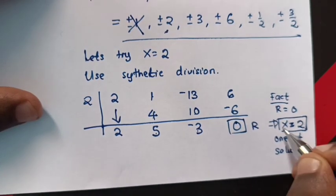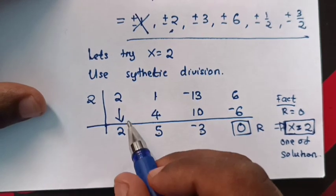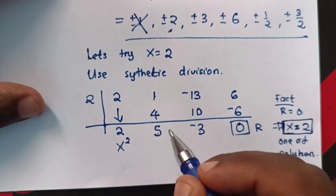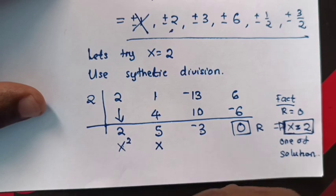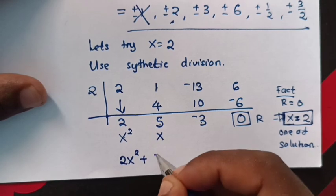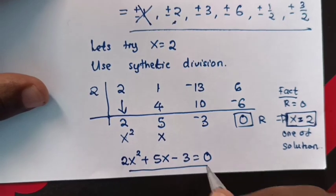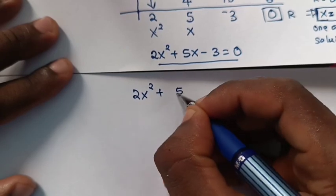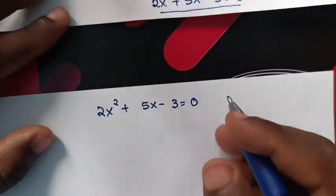To find the other solutions, the remaining coefficients from synthetic division are 2, 5, and negative 3. So 2 is the coefficient of x squared, 5 is the coefficient of x, and negative 3 is the constant. After dividing, the quadratic equation will be 2x squared plus 5x minus 3 is equal to 0. We are going to solve it by factorization to find the other values of x.